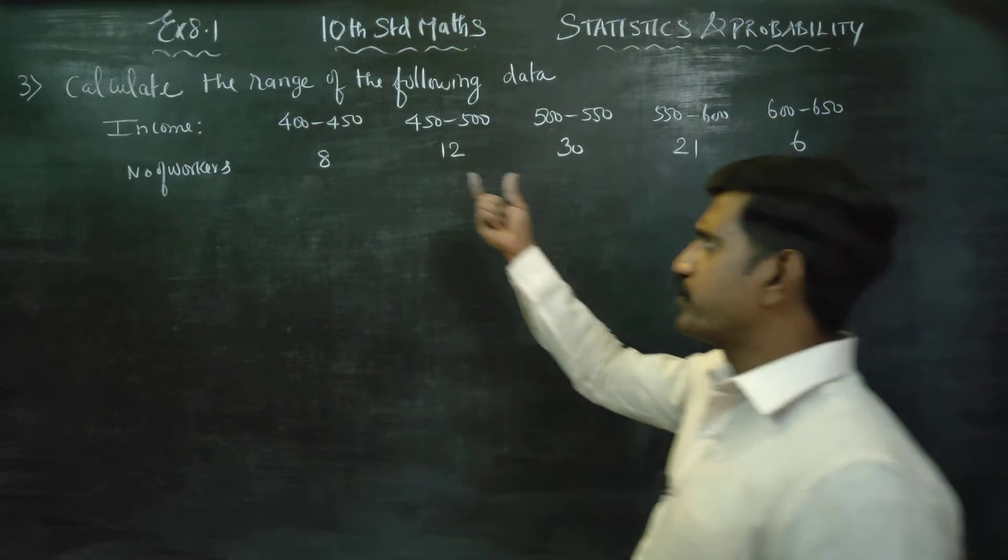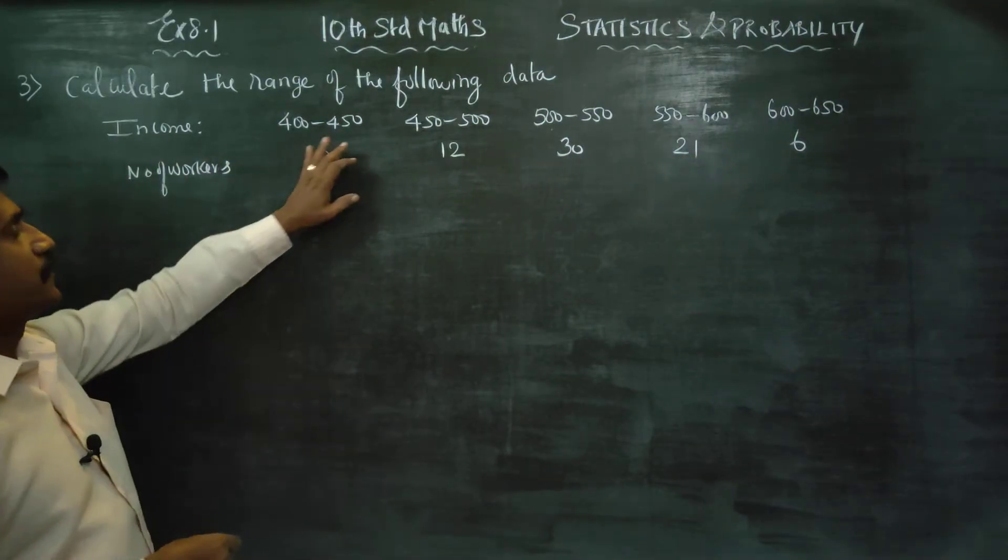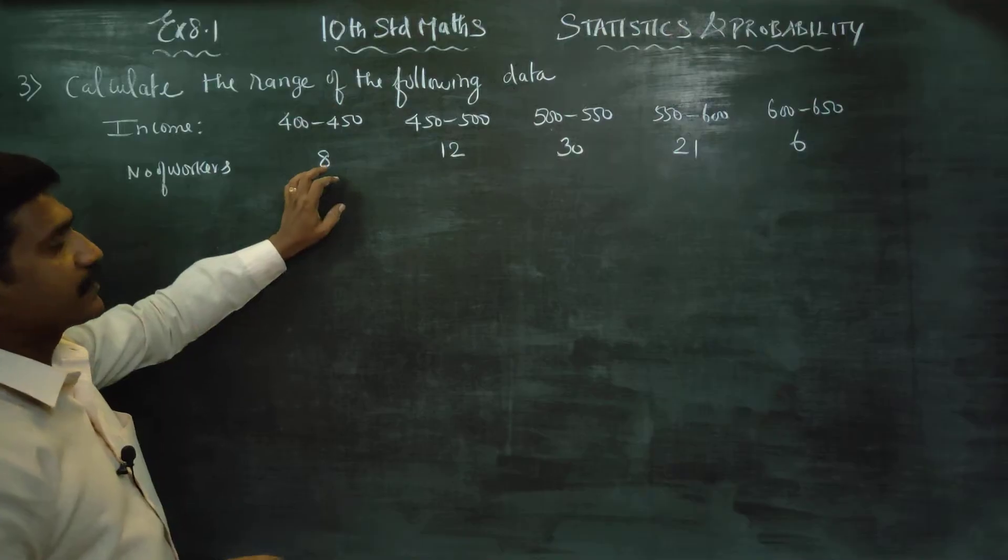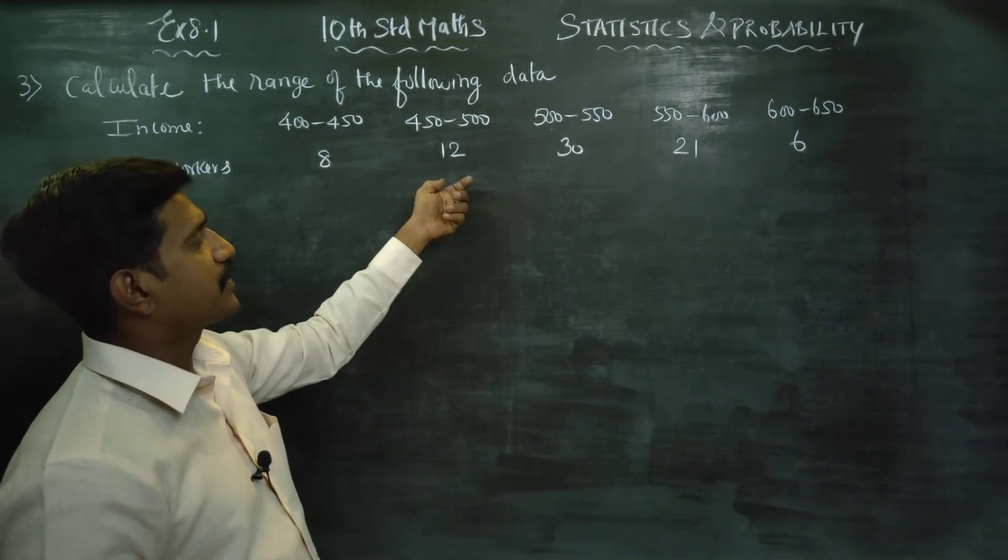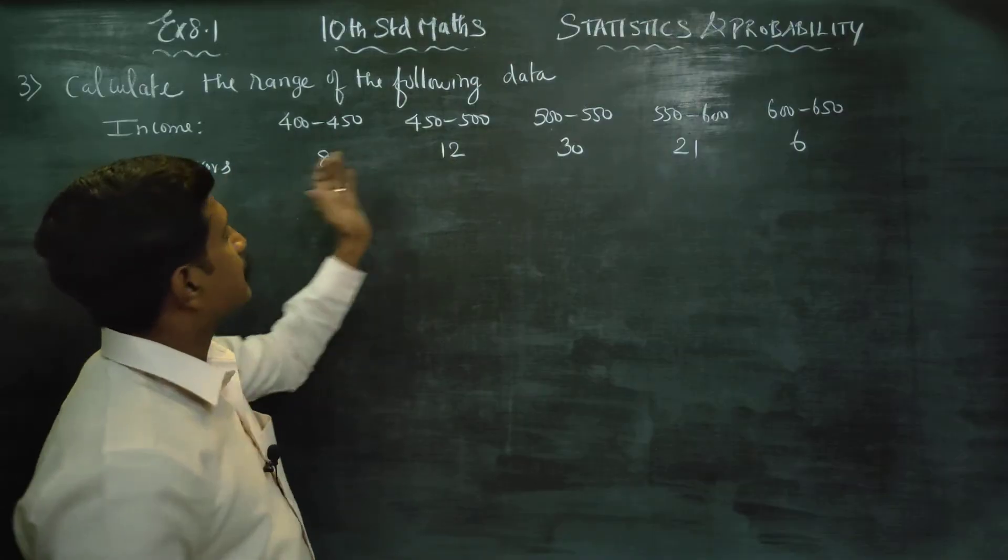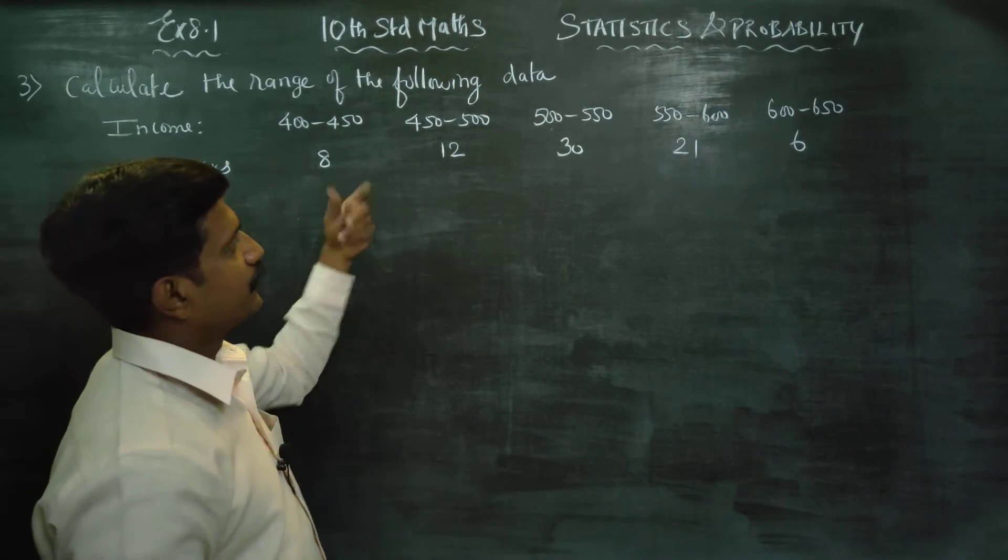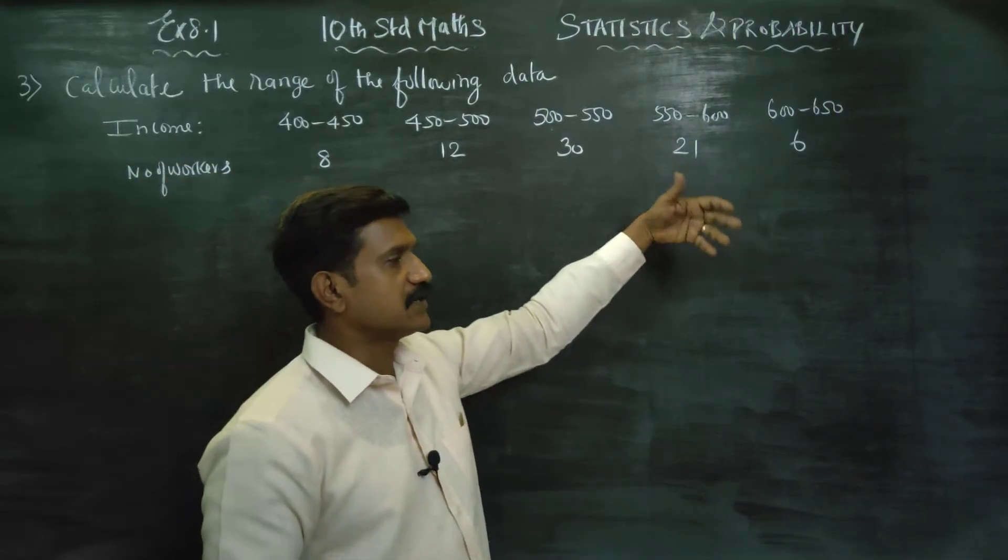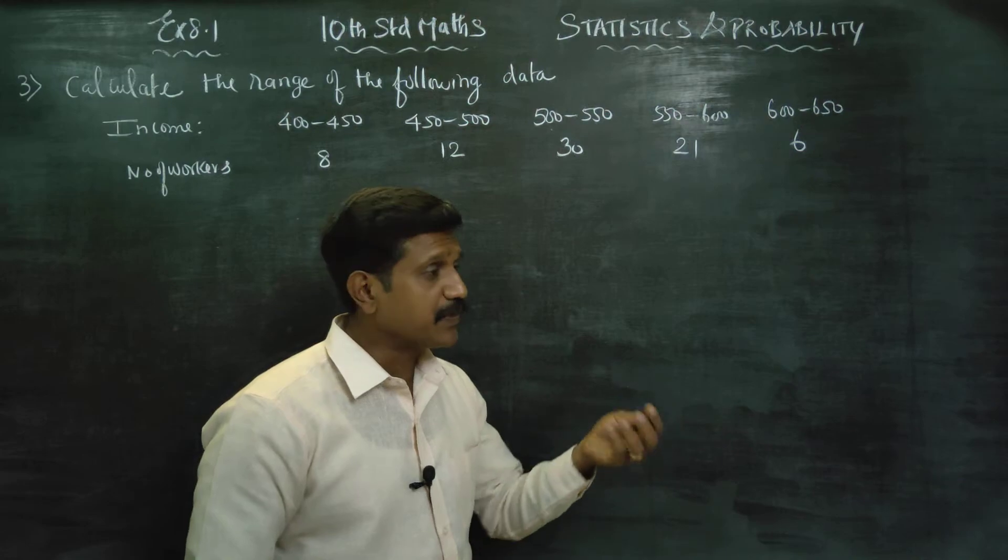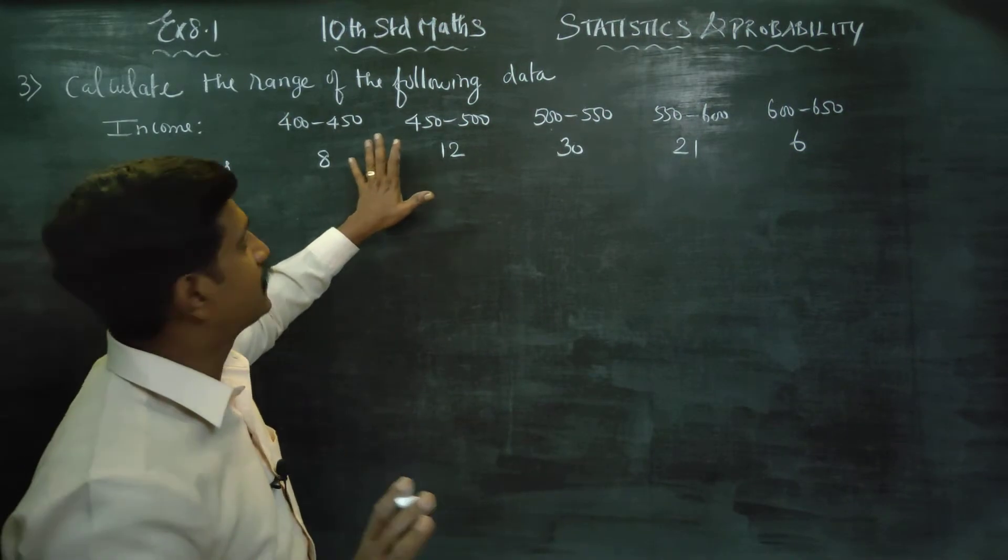This is called grouped data. 400 rupees to 450 income earners are 8 people. 450 to 500 income earners are 10 people. In this manner it is called grouped data. 400, 450, 500, 550, 650 - how many people earn exactly this amount we don't know. We only know the income ranges.